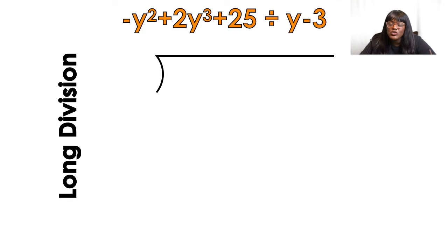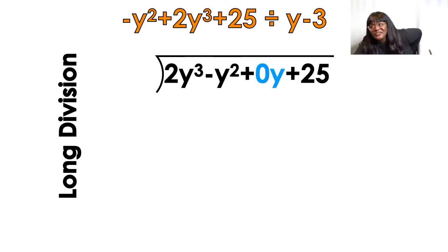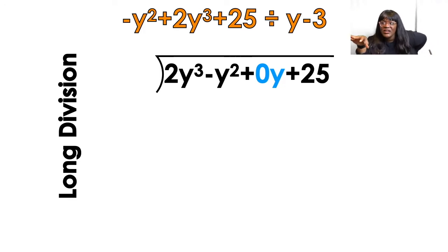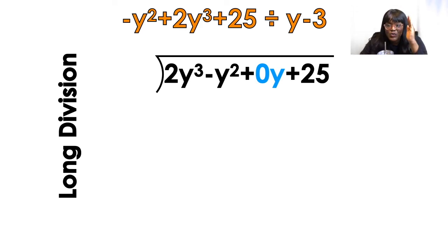The first thing you want to do is set up, so we're going to do long division first. You are going to set up the bigger part under, but you have to do it in descending order, and if there's any gaps, you want to fill in the gaps. Descending order means biggest exponent first. So the cube is the biggest, so I want to make sure the 2y cubed comes first, and then the negative y squared. And then there's no y term, so I'm going to fill it in and put 0y. And then I'm going to put the plus 25. For this to work, it needs to be in descending order, and if there's any gaps in the exponents, you want to fill them in with a 0.